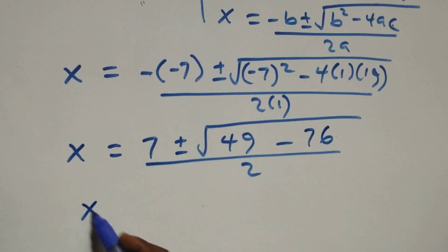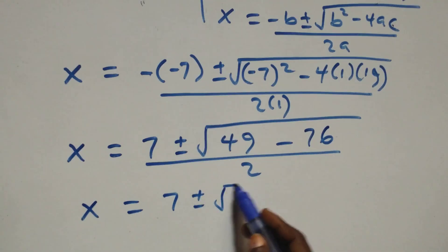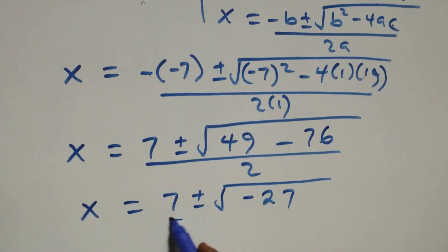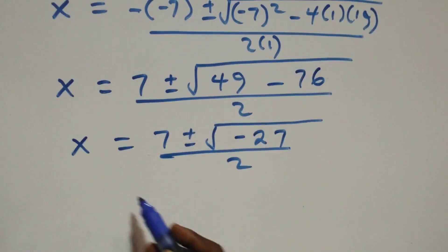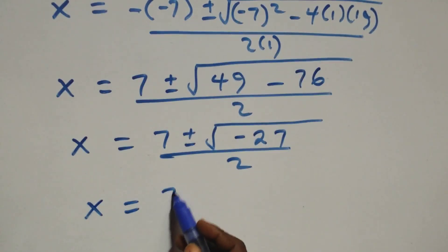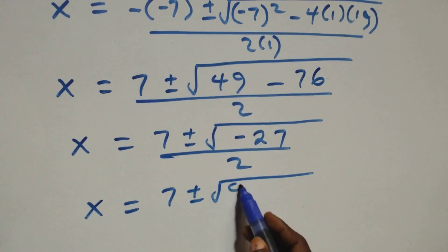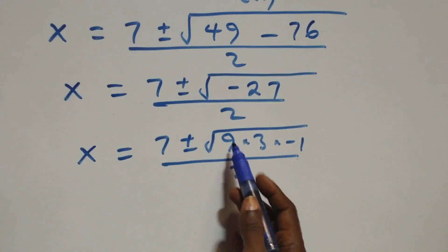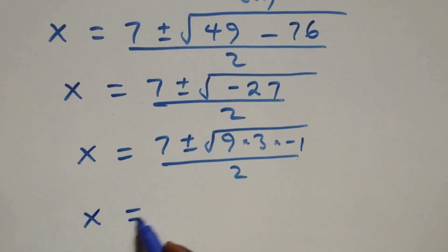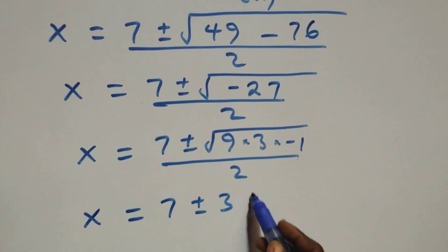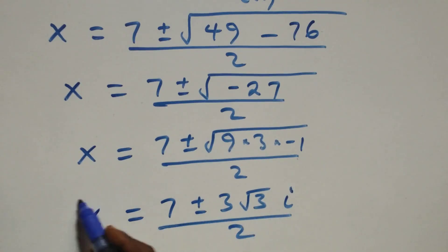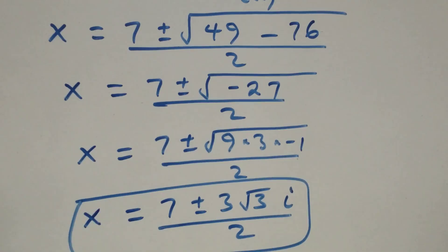So x equals 7 plus or minus square root of negative 27 over 2. We write this as x equals 7 plus or minus square root of 9 times 3 times negative 1, over 2. Separating root 9 as 3, we get x equals 7 plus or minus 3i√3 over 2. These are two complex solutions.